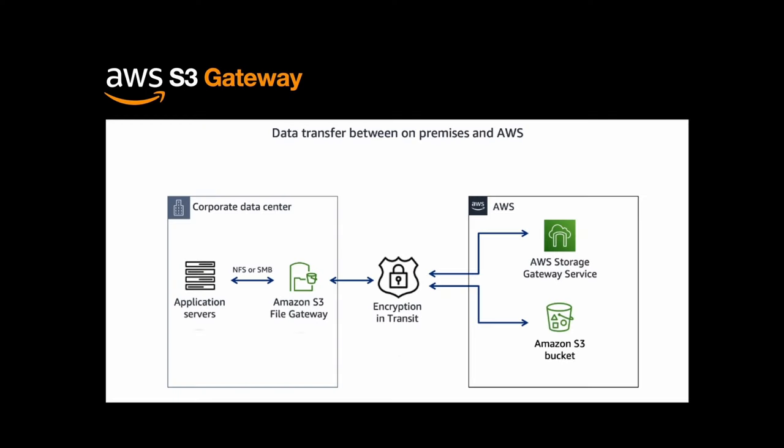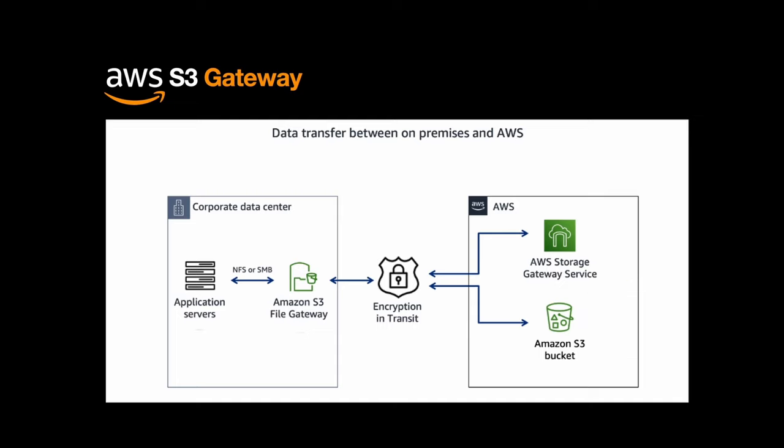If you have such a use case, the Amazon S3 File Gateway is installed on your on-premise architecture and over the internet it keeps syncing with the AWS S3 bucket. All encryption in transit and at rest is taken care of by AWS S3 Gateway. This S3 Gateway acts as a gateway that exposes an S3 bucket to your corporate data center as local storage, and in the background it keeps syncing that data with S3 buckets, handled on the AWS side by the AWS Storage Gateway service.